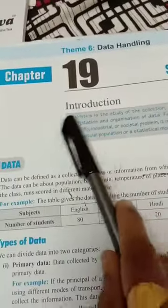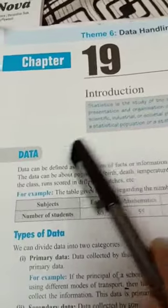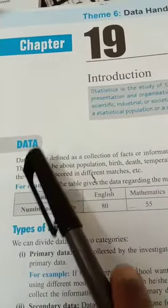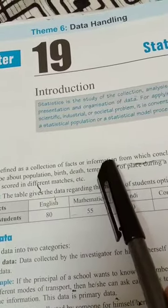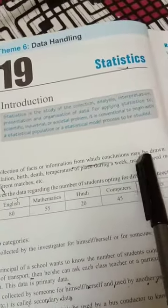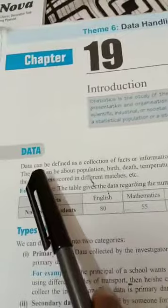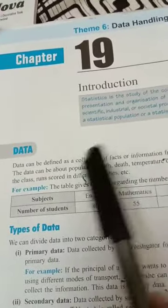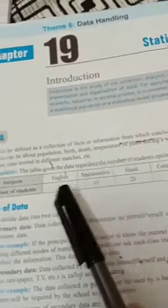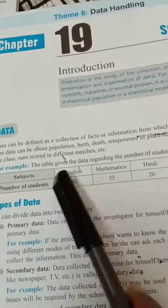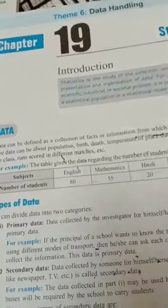In statistics, very numeral figures - here numbers we are calling data. What is data? Data can be defined as the collection of facts or information from which a conclusion may be drawn. Data means collection of information. For example, the table gives the data regarding the number of students opting for different subjects. This is one data.